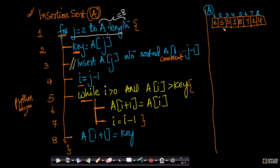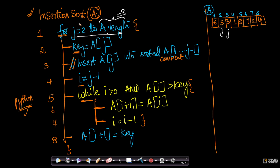We took the second element and tried to insert it into the already trivially sorted array — the same thing we're doing here. So j will first be 2, then 3, then 4, and so on up to 8, incremented by 1 each time. This notation — 'for j = 2 to A.length' — is much more readable than writing the full C-style notation: 'for j = 2; j <= A.length; j++'. This is the beauty of CLRS pseudocode: it is very readable and language independent.